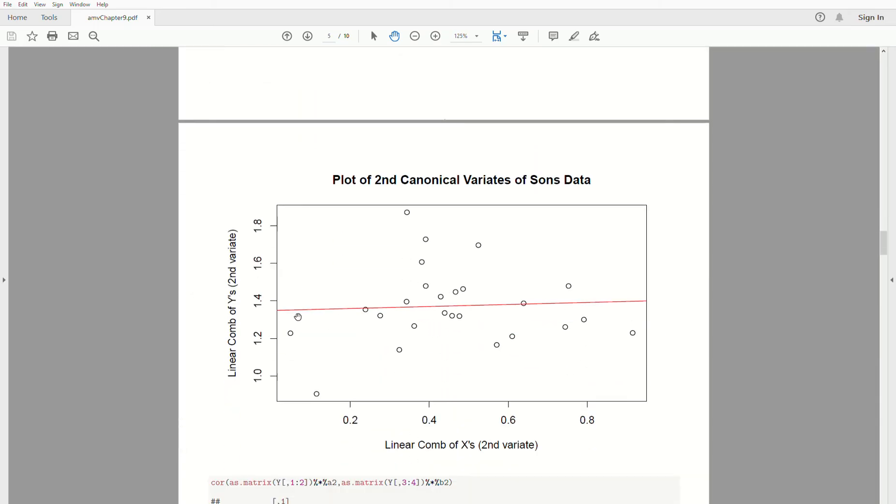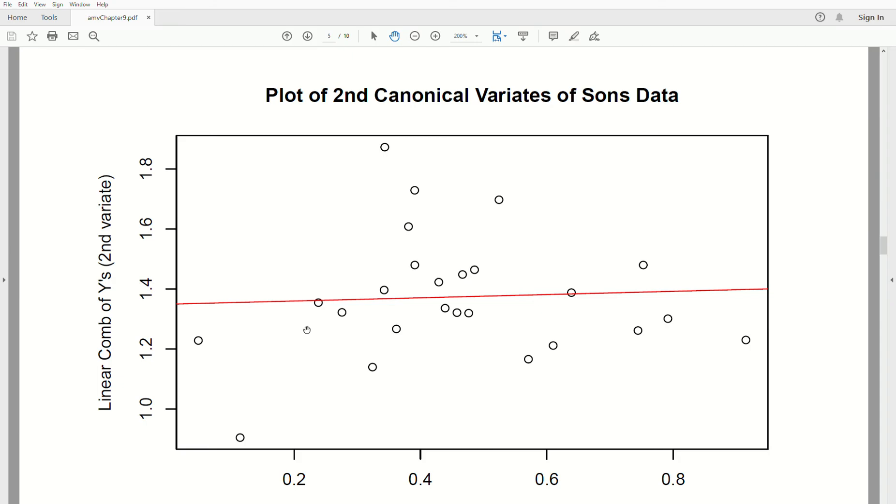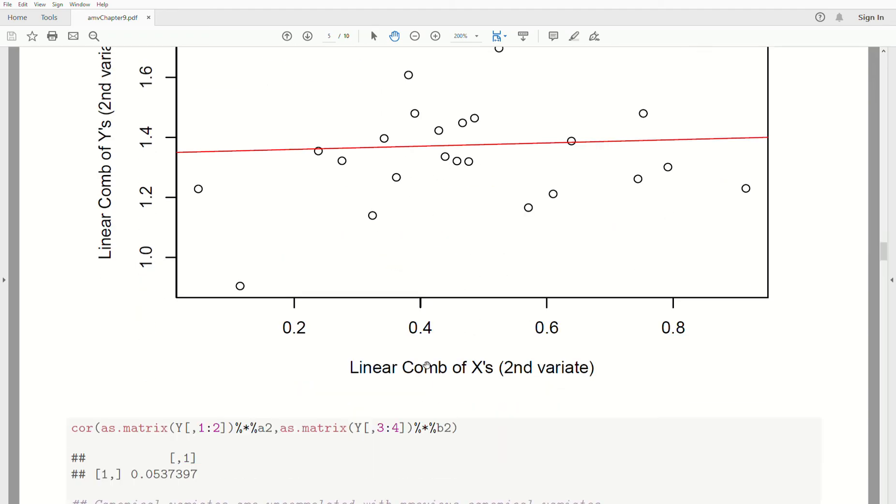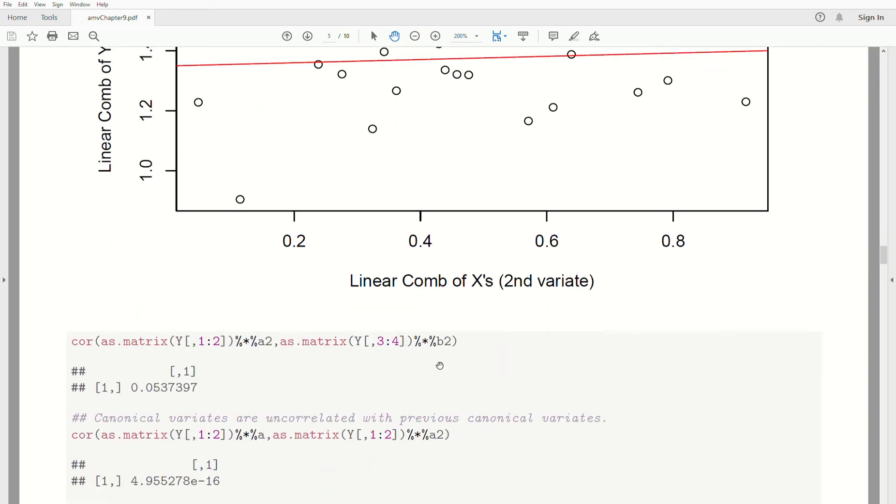Here is the plot of it. This is the plot of second canonical variate of the sun's data. And this is not very impressive, right? It's pretty much a horizontal line. And that is the case.